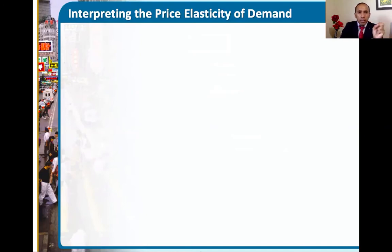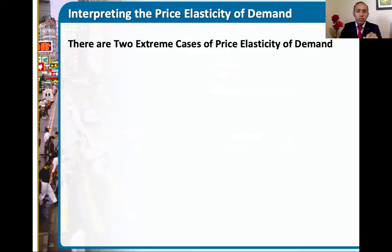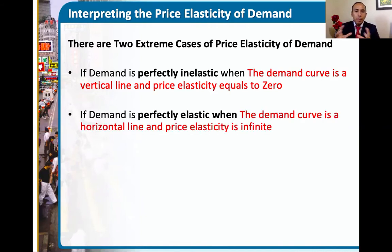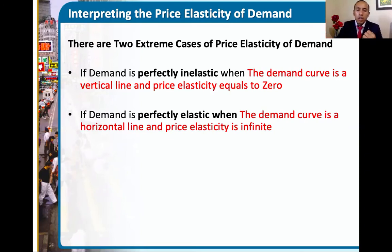We need to continue interpreting elasticity as it is very technical in meaning, calculation, and graphical illustrations. There are two extreme cases. The most extreme situation is when price elasticity of demand is perfectly inelastic, meaning the demand curve is a vertical line and the price elasticity of demand is equal to zero. On the other extreme, if the demand is perfectly elastic, the demand curve is a horizontal line, meaning consumers are highly — infinitely — responsive.